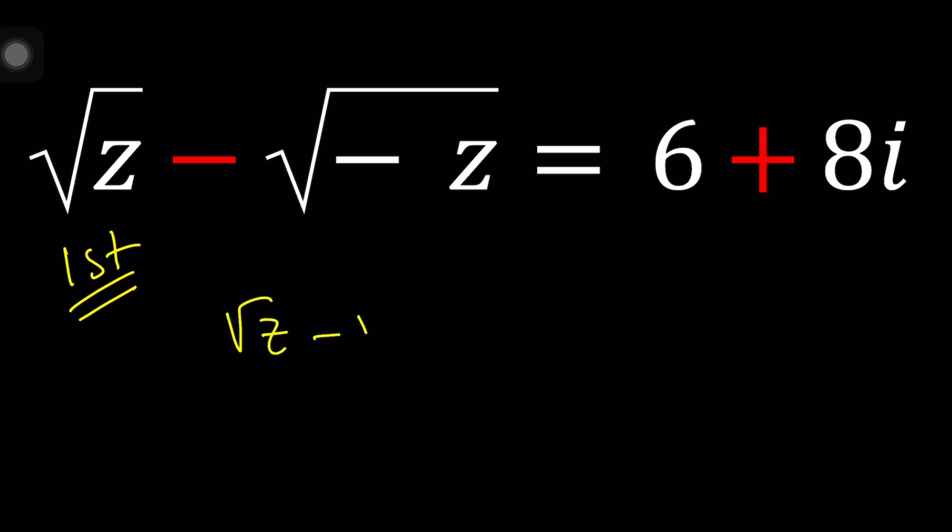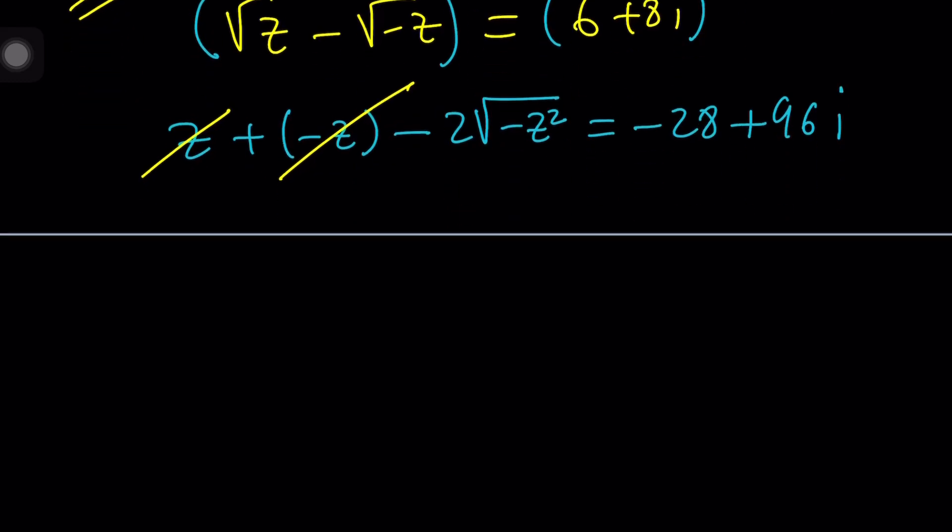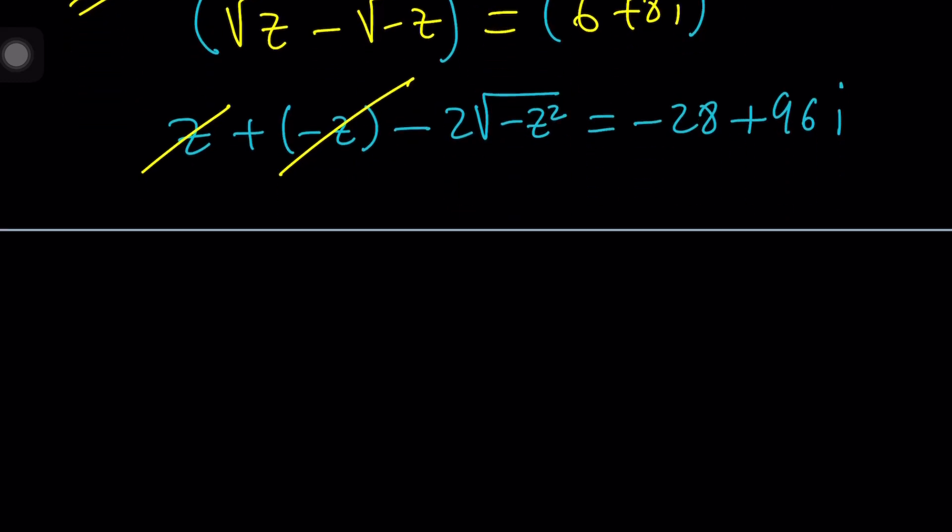Let's start with the first method. For my first method, I want to take this equation and square both sides. Because we have radicals, this will help. When you square a difference, you're going to get a squared plus b squared minus 2ab. And ab can be written as square root of negative z squared. The right-hand side is going to be 6 squared, 36, minus 64, which is negative 28, plus 96i.